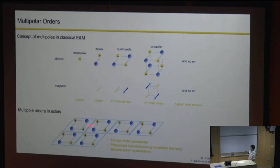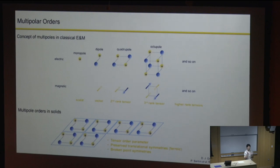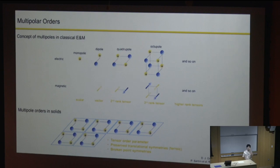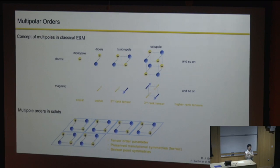If you take a more careful look, the square lattice has four-fold rotational symmetry, but the electric quadrupole only has two-fold. The point symmetries are typically broken by these kinds of orders. And since we need a tensor to describe such a thing, when we look at the fields available to us—electric field and magnetic field, which are only vector fields—we cannot capture this tensor efficiently in the linear response. That's why it's very hard to see.